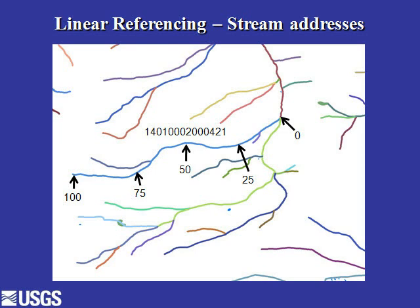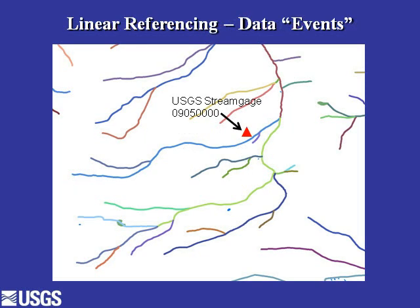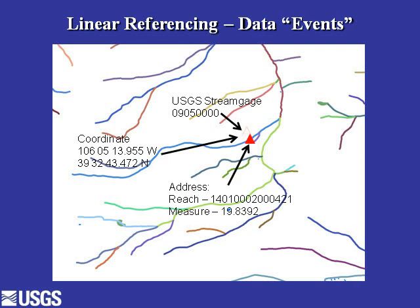You can take any point along a stream and assign it a value representing its upstream address. For example, a USGS stream gauge — we know its latitude and longitude in space, but we really want to snap it to the network, just like a GPS. We snap the stream gauge to the network and get its network address. In this case, the gauge is on reach 1401-0002-000421, at 19.8392% upstream on that stream segment. There is only one spot in the United States with this address — two identifiers tell us exactly where anything is on the network.